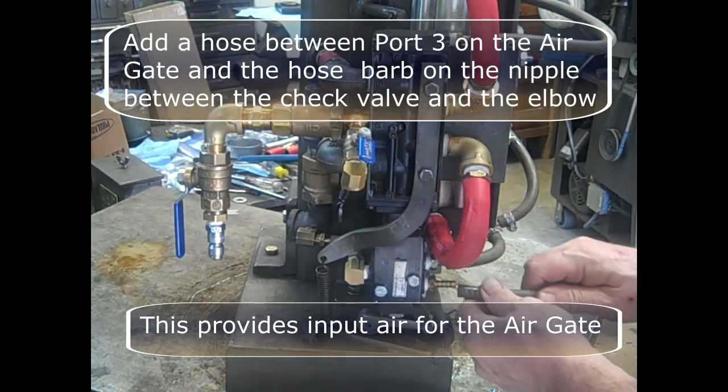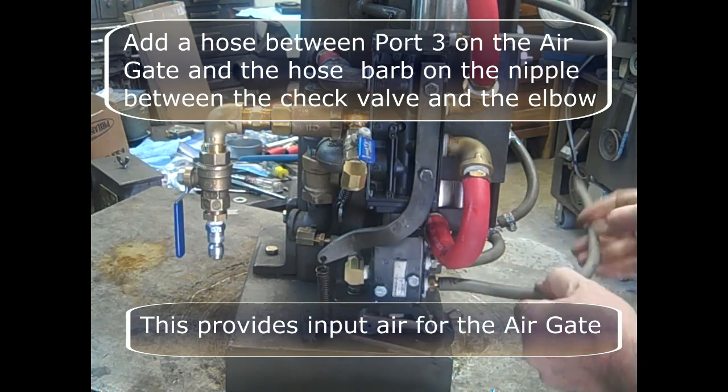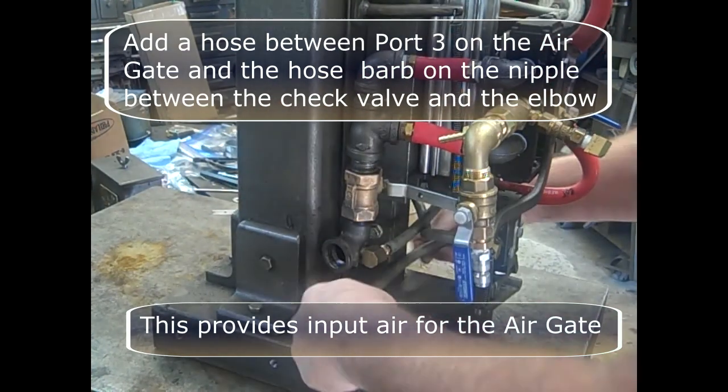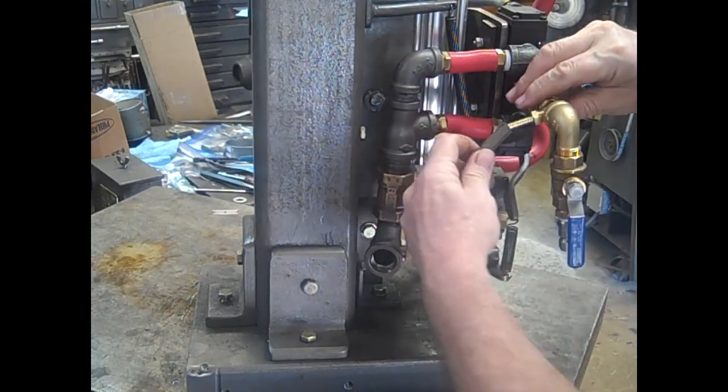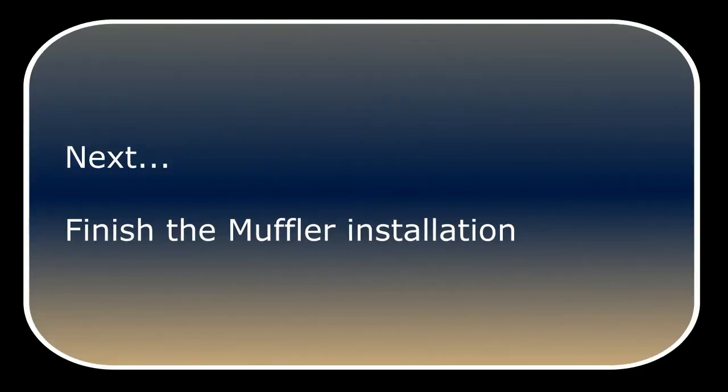Finally, add a hose between port three on the air gate and the hose barb on the nipple between the check valve and the elbow. This provides the input air for the air gate. Next, we'll finish the muffler installation.